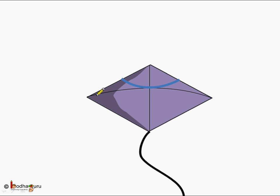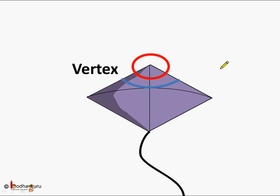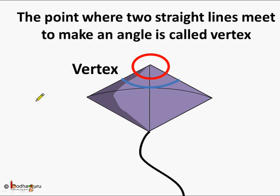Now, in this kite, these two are the lines. They meet here, and this is the angle formed. The point where the two straight lines meet is called the vertex. You can say the point where the two straight lines meet to make an angle is called the vertex. Same way, these two lines are also making an angle. And where do they meet? They meet at this point, so this point is also the vertex.